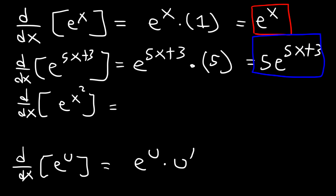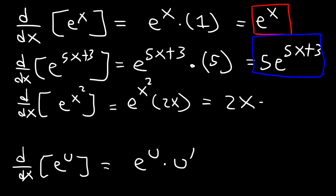Now for the next example, it's going to be the same thing: e raised to the x squared times the derivative of x squared, which is 2x. So the answer is going to be 2x times e raised to the x squared.